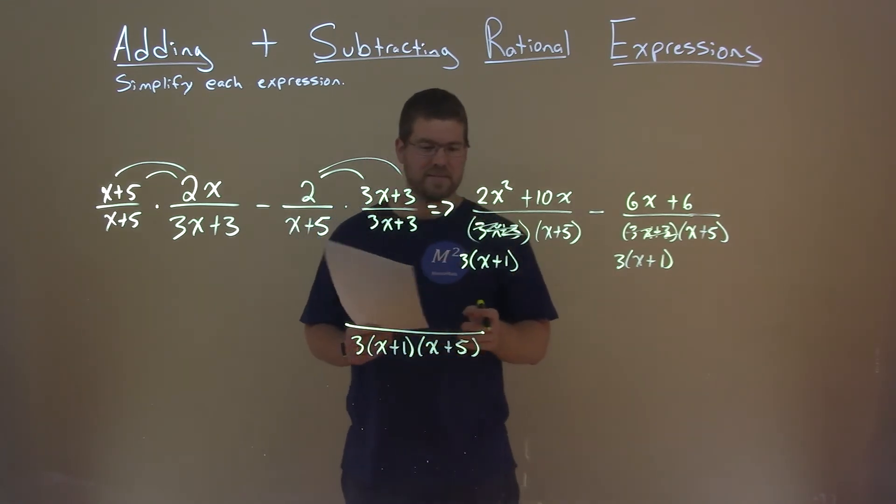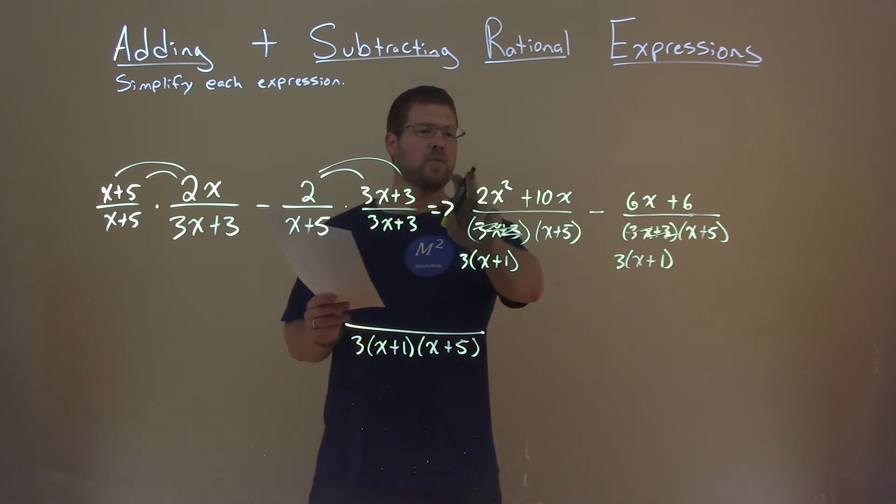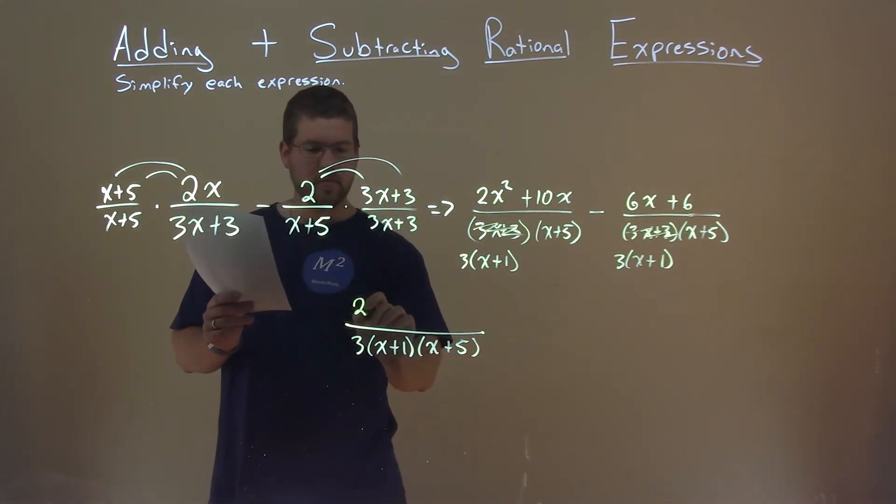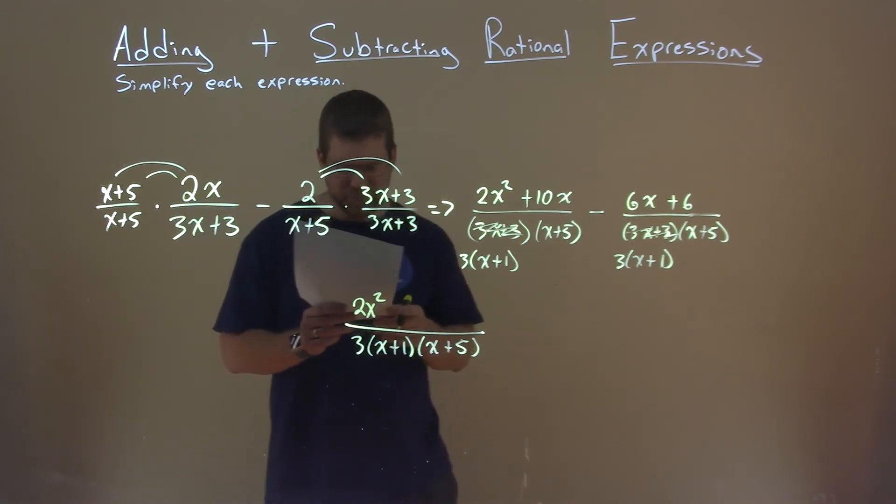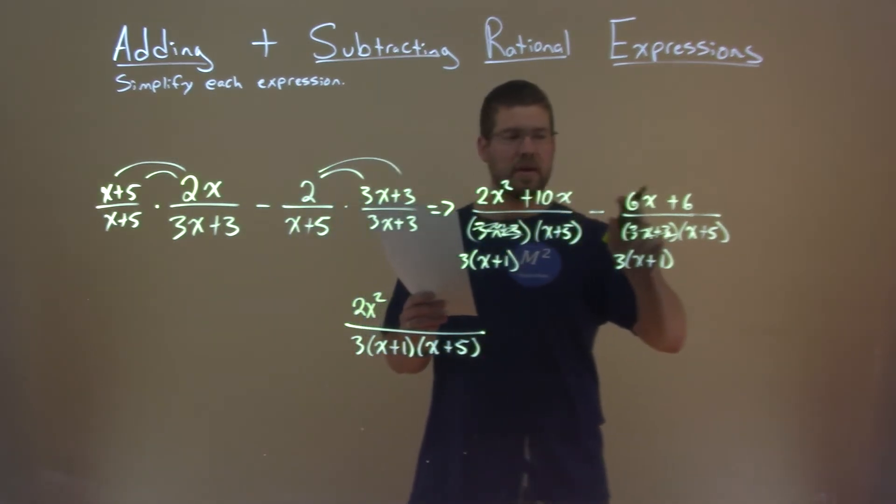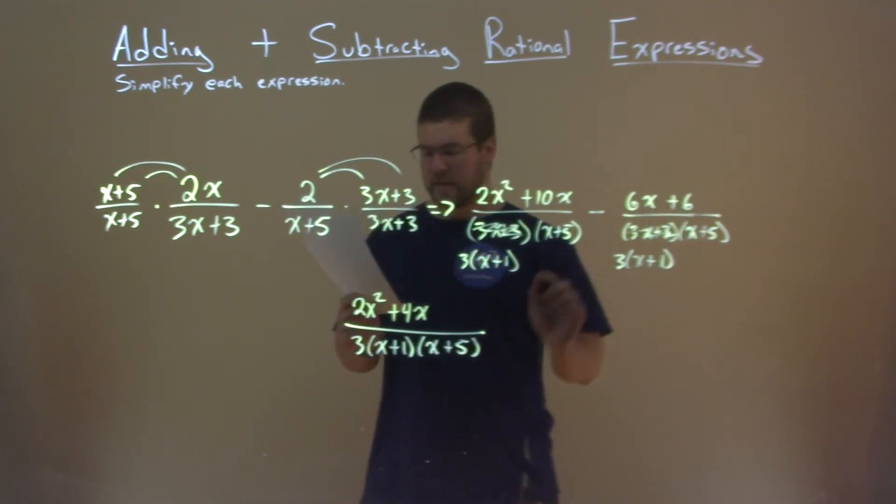Now, since we have a common denominator, we can add our numerator. 2x squared, there's nothing else with an x squared there, so we'll just bring that down. Now we have 10x minus, don't forget to distribute it, 6x. That's 4x. And then we're left with just a minus 6 in the numerator.